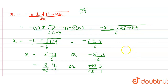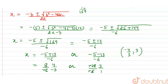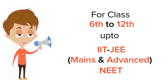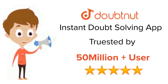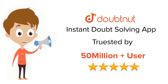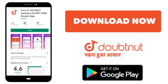So the roots of the quadratic equation are minus 4 by 3 and 3. These are the two roots of the given quadratic equation. For class 6 to 12, IIT JEE and NEET level, trusted by more than 5 crore students — download Doubtnut today.